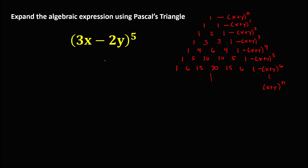Then for this given, to expand this algebraic expression using Pascal's triangle, since the exponent is 5, this is the row with exponent 5. Therefore, these are the numerical coefficients for every term: 1, 5, 10, 10, 5, and 1.